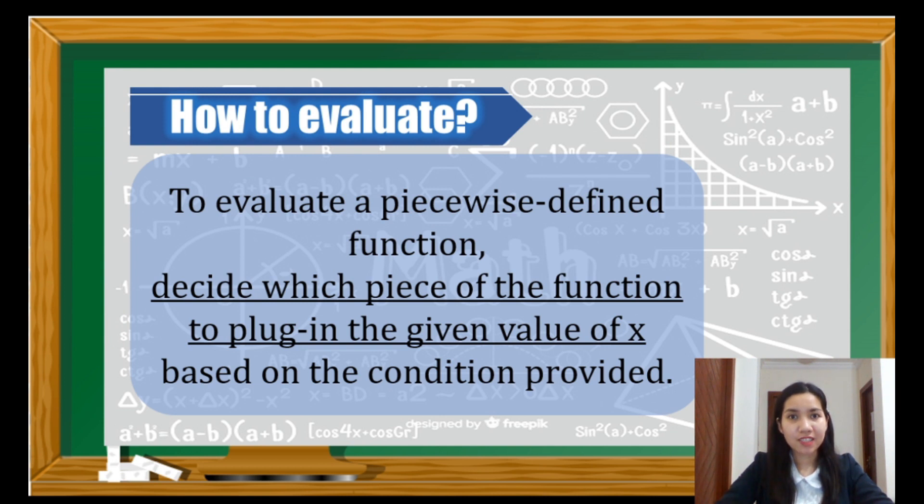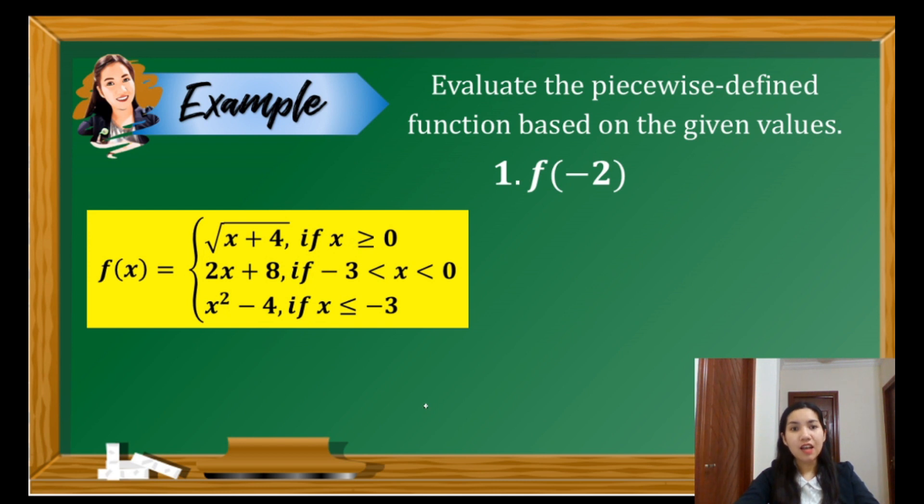Let us apply this to some examples. Given the function f(x), it contains 3 sub-functions and each has corresponding condition for its domain. For our problem, we have to evaluate the function when x is negative 2. Where is negative 2 located in our conditions? Negative 2 is between negative 3 and 0. So it means we have to use 2x + 8 to evaluate this function. Substitute negative 2, so we have 2 times negative 2 plus 8. It becomes negative 4 plus 8. Simplify, we have 4. So the value of the function when x is negative 2 is positive 4.